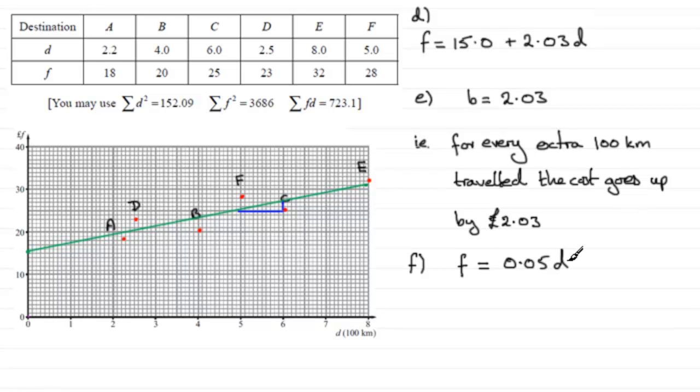Well, 0.05 times 800 turns out to be 40. That's this point here. So what I'm going to do is plot the graph of the costs for travelling a certain amount of kilometres under the rival company.